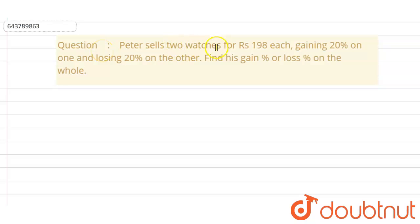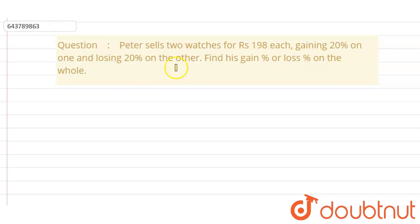Peter sells two watches for rupees 198 each — gaining 20% on one and losing 20% on the other. Find the overall gain percentage or loss percentage on the whole transaction.